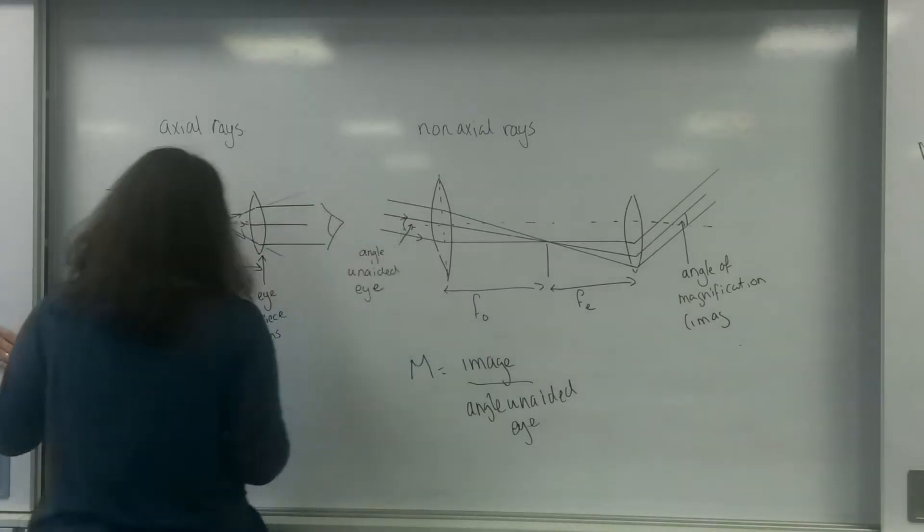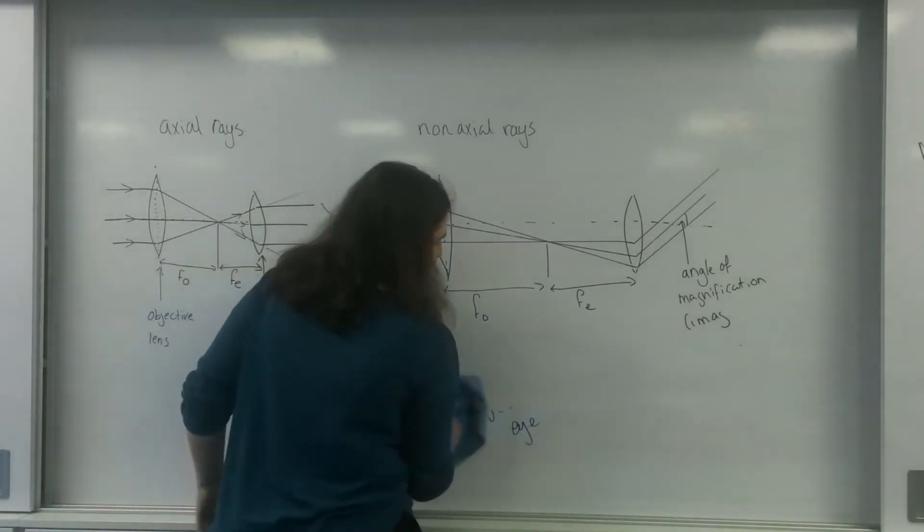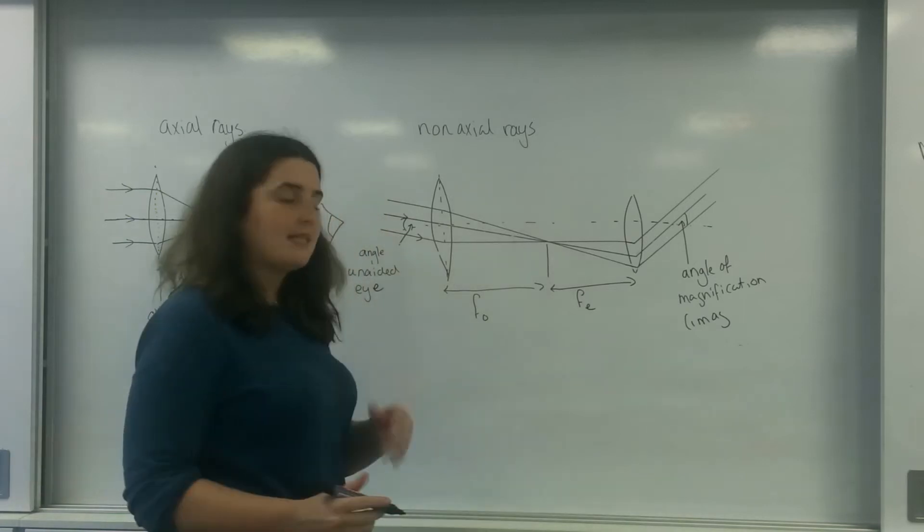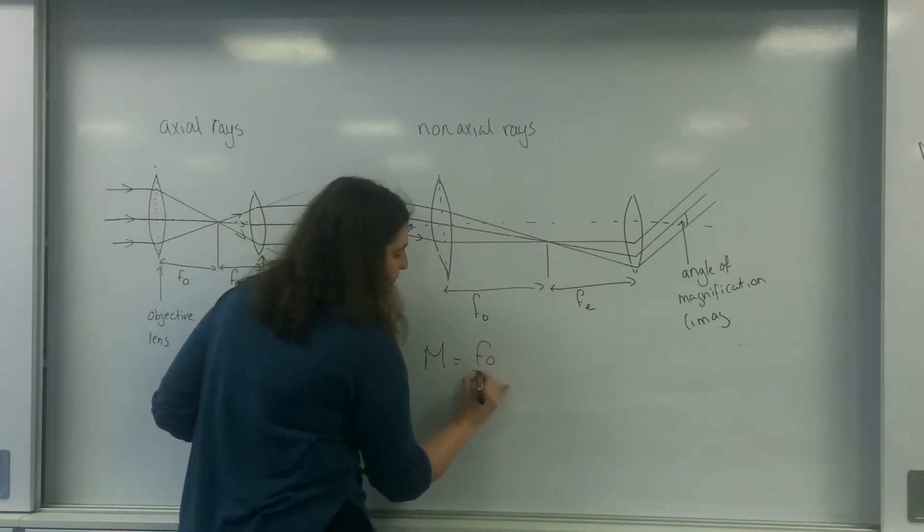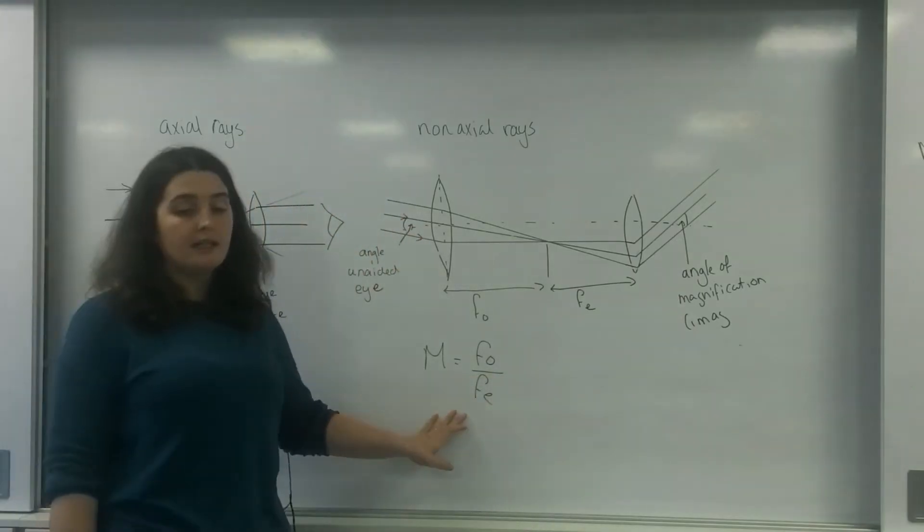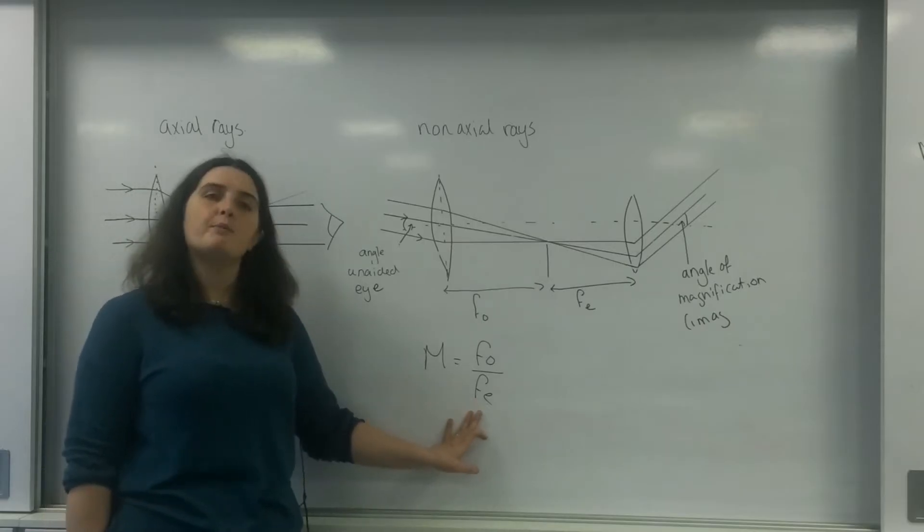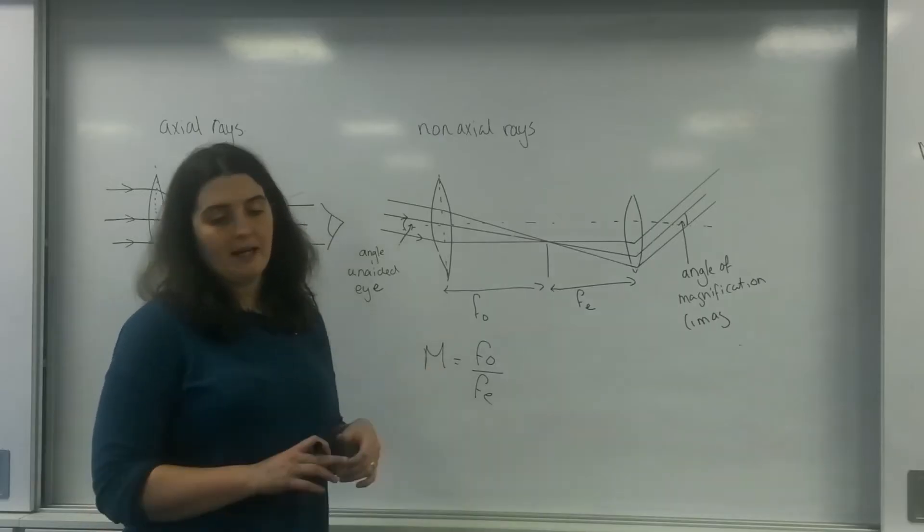The equation for magnification of a telescope, a refracting telescope, is that magnification is F0 over FE. The smaller that the eyepiece, the smaller the eyepiece optical length is, or the focal length is, the much bigger the magnification.